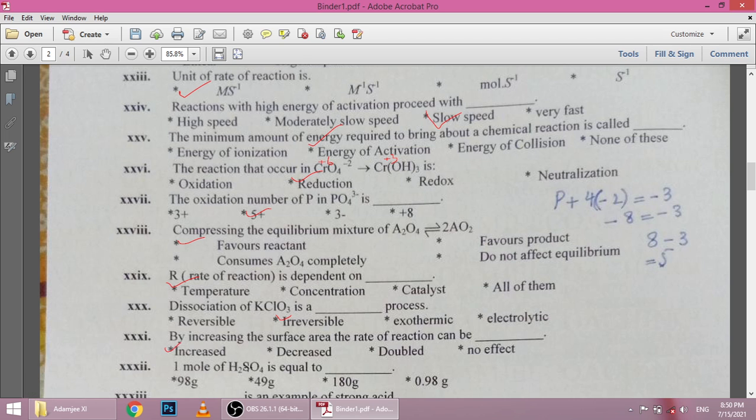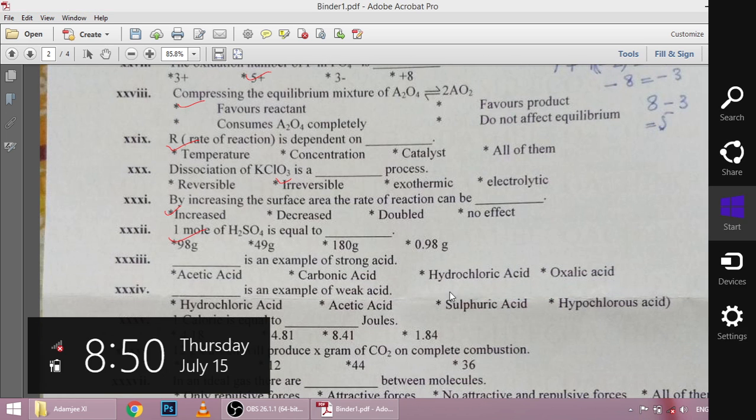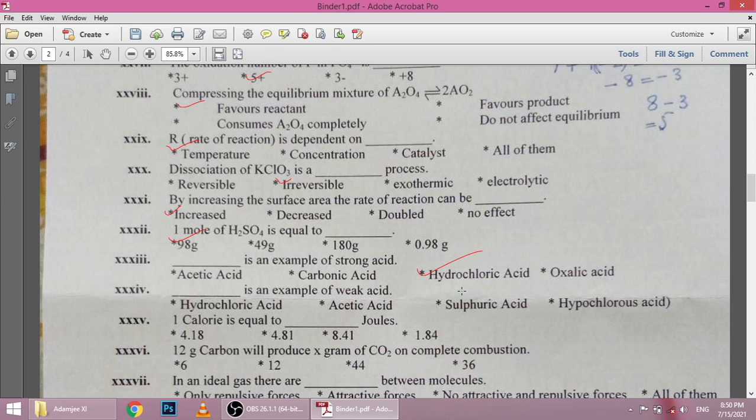One mole of sulfuric acid is equal to 98 grams. Dash is an example of strong acid. Acetic acid is weak acid. One calorie is equal to 4.184 joules.